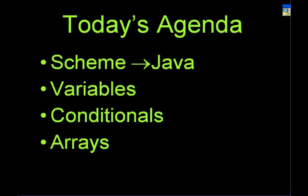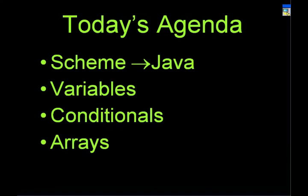Today we'll begin by looking at some of the Scheme code we've seen so far in dealing with OOP, and then we'll see how we do the same thing in Java. In recitations we've seen your food, your aged food, your vending machine. In lectures you've seen the speaker, the lecturer, the arrogant lecturer. We'll see how to convert this into Java, and also go into some other concepts such as how to define variables, conditionals like if-else statements, and what arrays are.